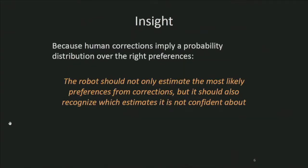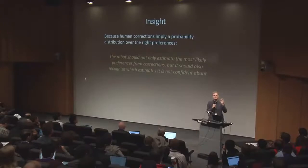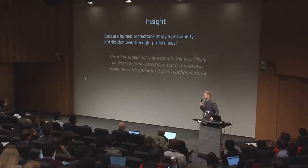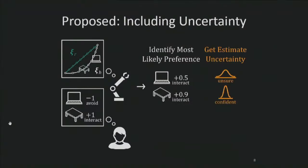In reality, human corrections aren't perfect. They imply a probability distribution and reveal the true preferences with different levels of certainty. Our insight is that the robot should not only estimate the most likely preferences from corrections, but it should also recognize which estimates it is not confident about. So now, instead of learning to definitely interact with both the laptop and table, the robot realizes that the human has clearly corrected the table feature, but their laptop preferences remain unclear. A robot that includes uncertainty knows what it does not know and can use this information when learning from human corrections.